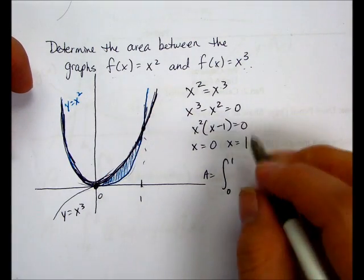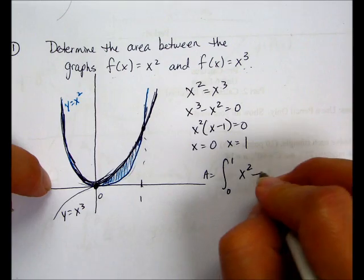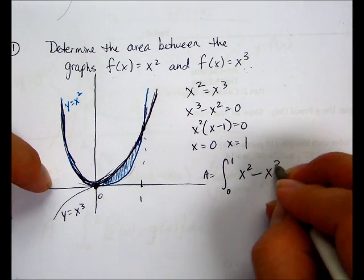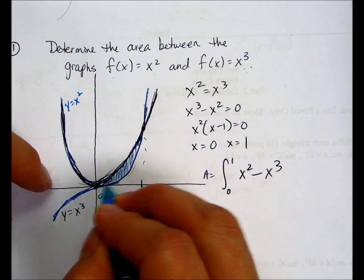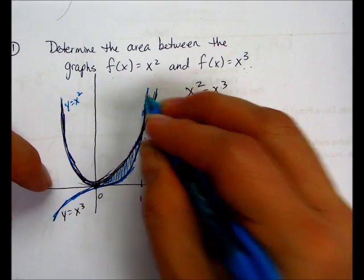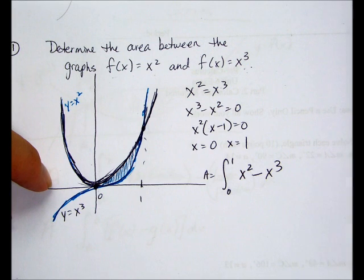Okay, so x squared minus the lower function is x cubed. Here's a lower function like this. dx.